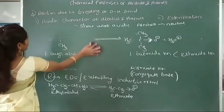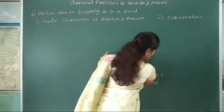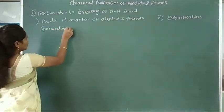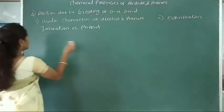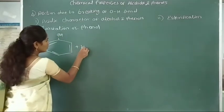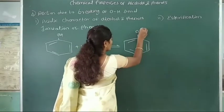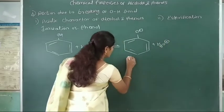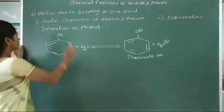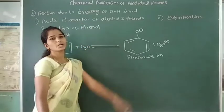Now we see the second point: acidic character of phenol. We will study the ionization of phenol. This ionization of phenol is represented by the equilibrium: C₆H₅OH + H₂O ⇌ C₆H₅O⁻ + H₃O⁺. Here, phenol is converted into the phenoxide ion after breaking of the oxygen-hydrogen bond.